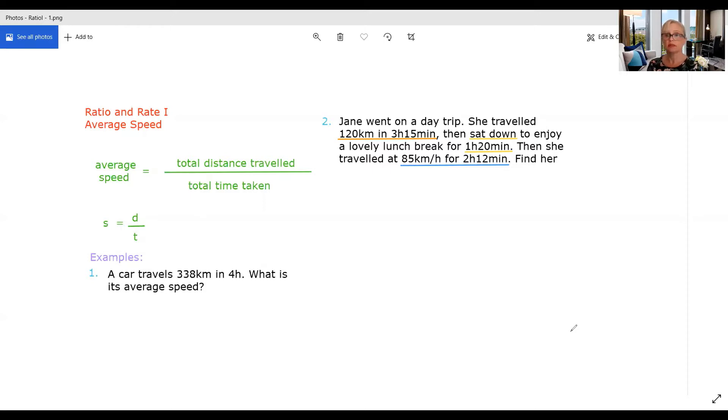Average speed is your total distance travelled divided by the total time taken. Now some people do remember this as separate formulae. I prefer just to remember it like this, sub in what I know and rearrange them rather than learning three different formulae.